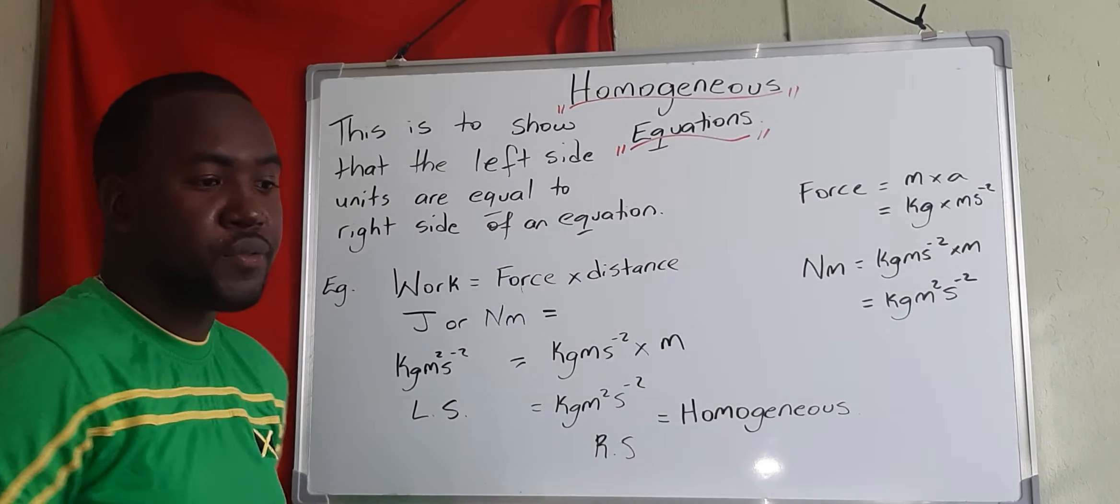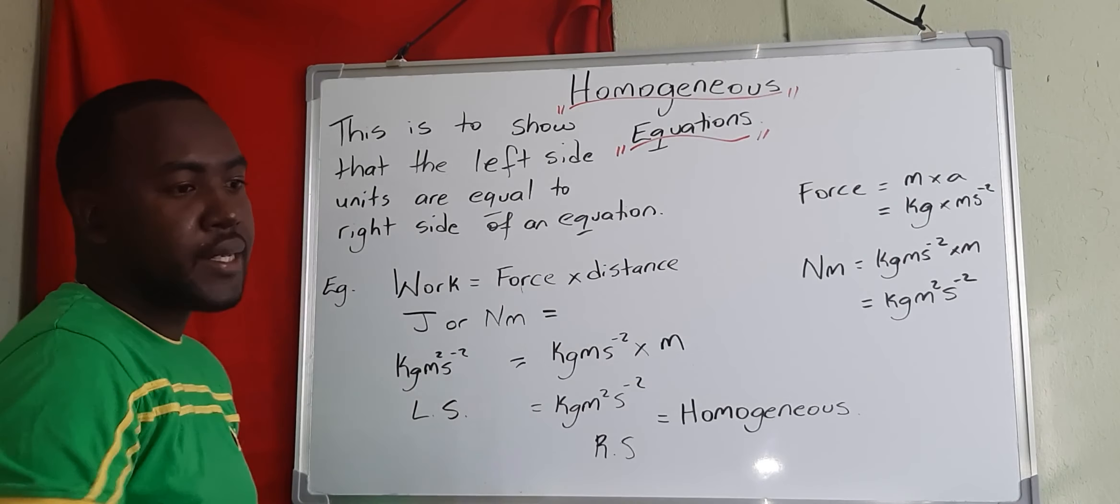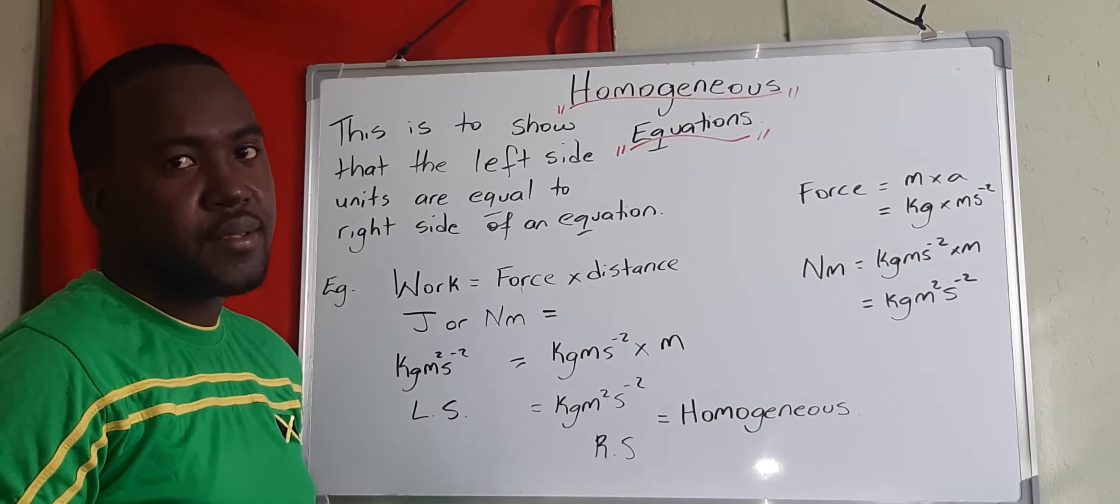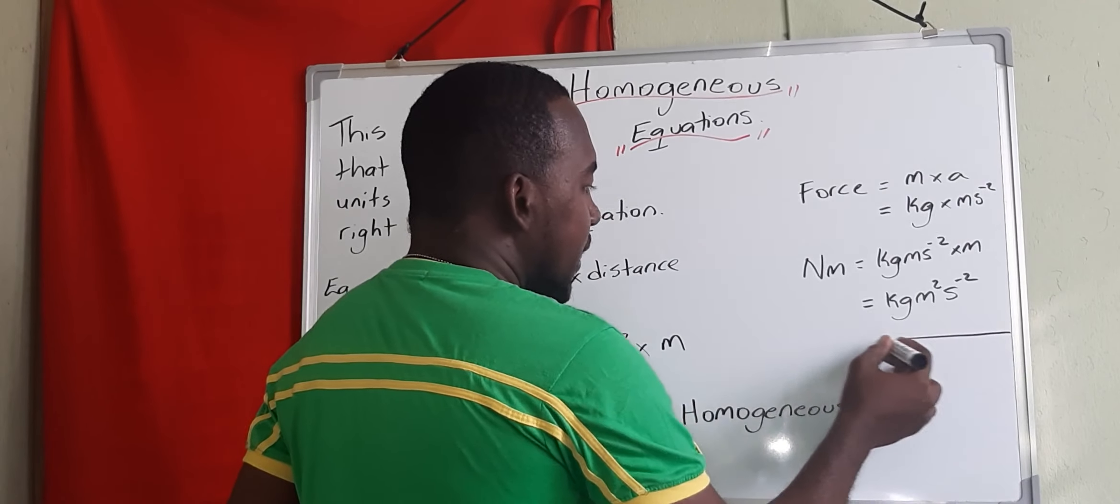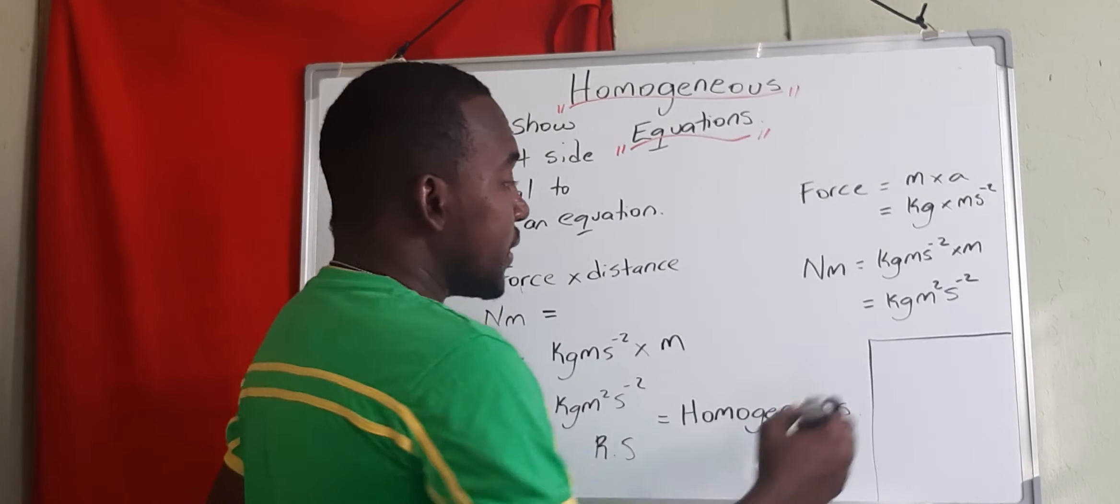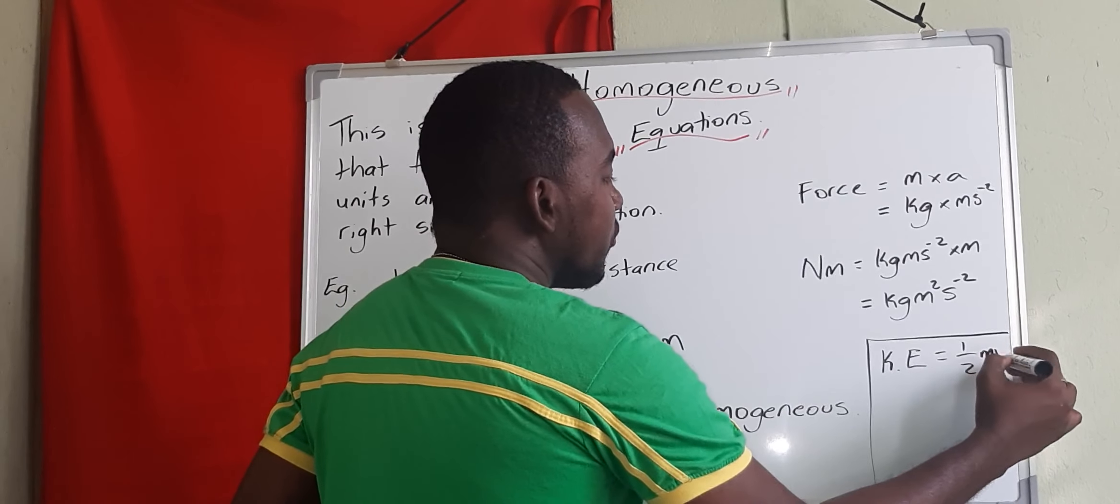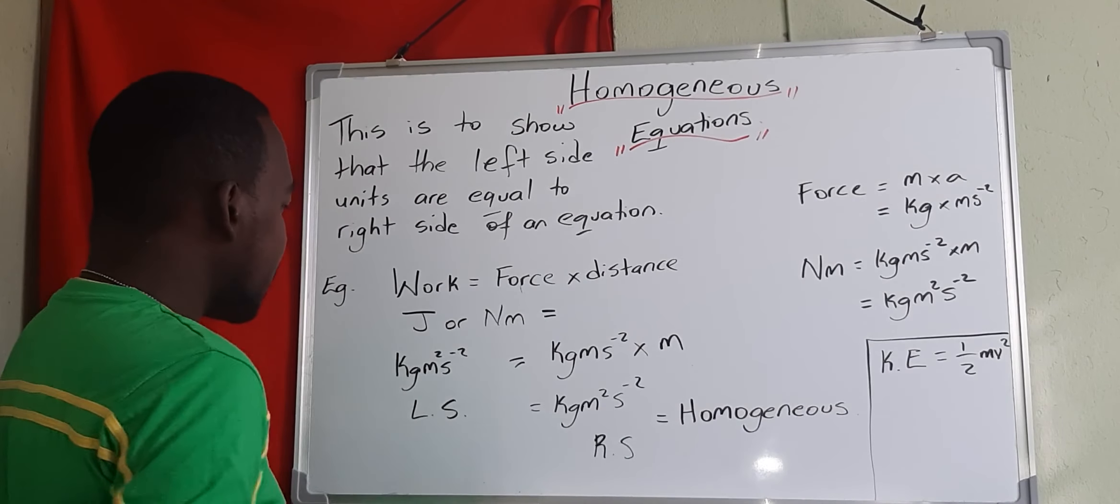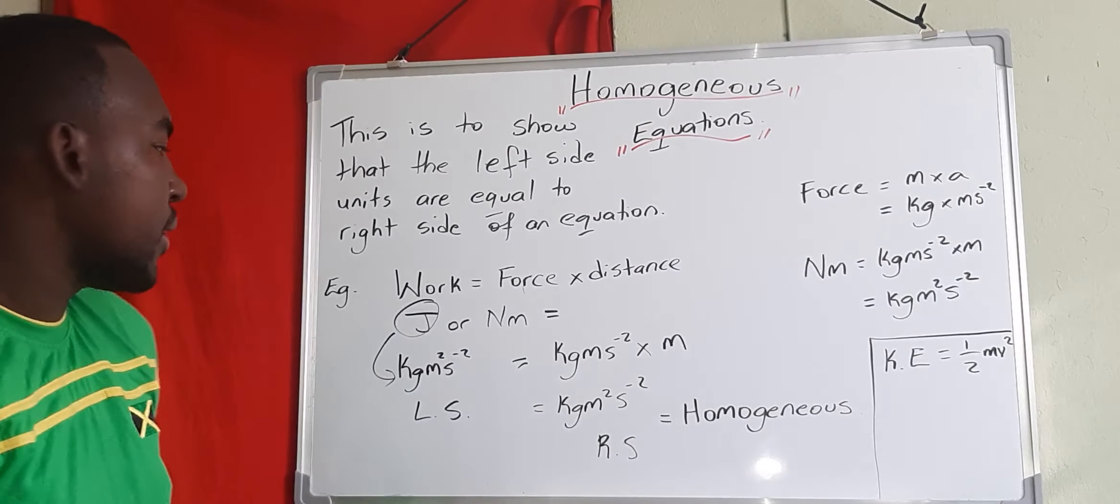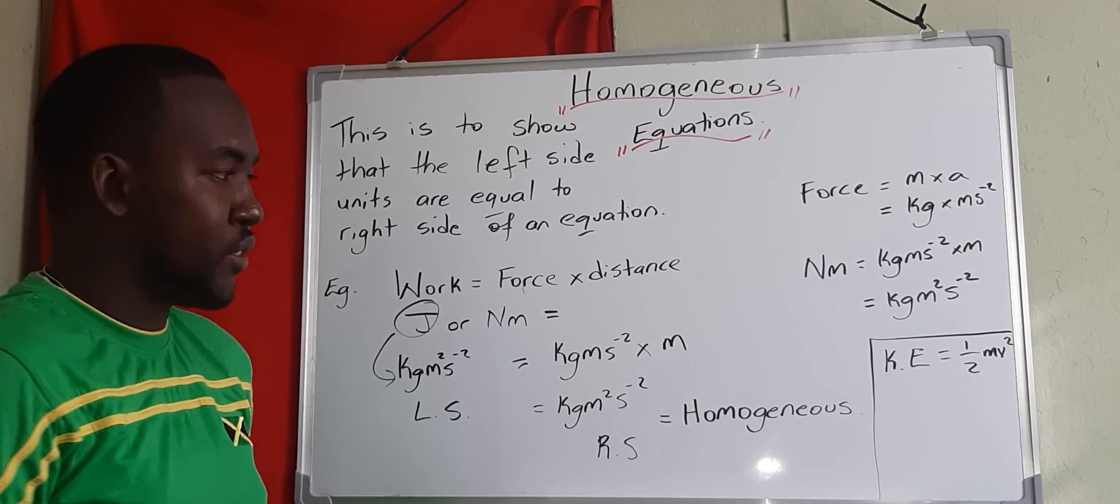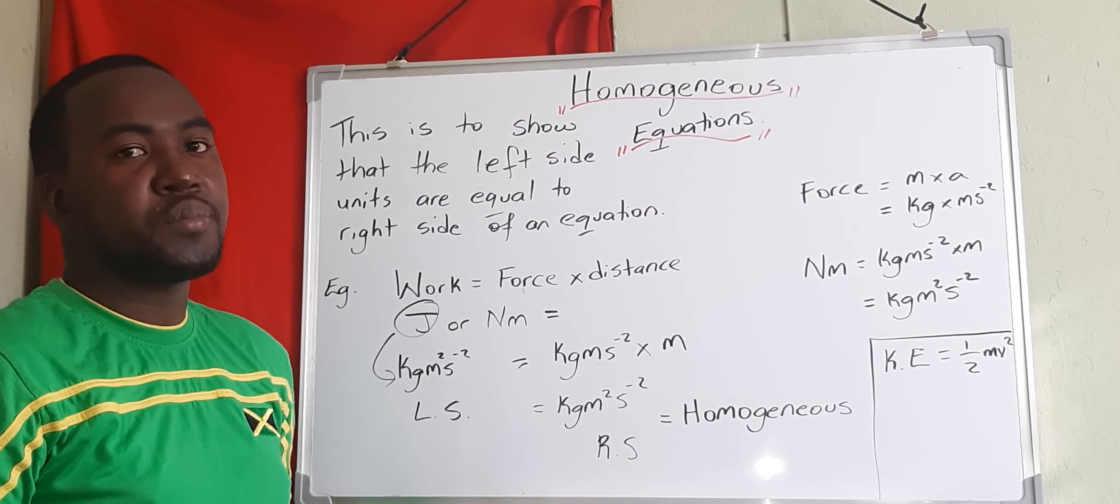This is how you find if an equation is homogeneous or not. If the left side is not equal to the right side, then we see that that equation is not homogeneous. So I want you to actually try this one and comment below if it's homogeneous. It's kinetic energy, it is half mv squared. And I'll help you out, because kinetic energy is measured in joules, and the joule is kilogram meter squared per second squared. So you're going to check now if that side is equal to kilogram meter squared per second squared.